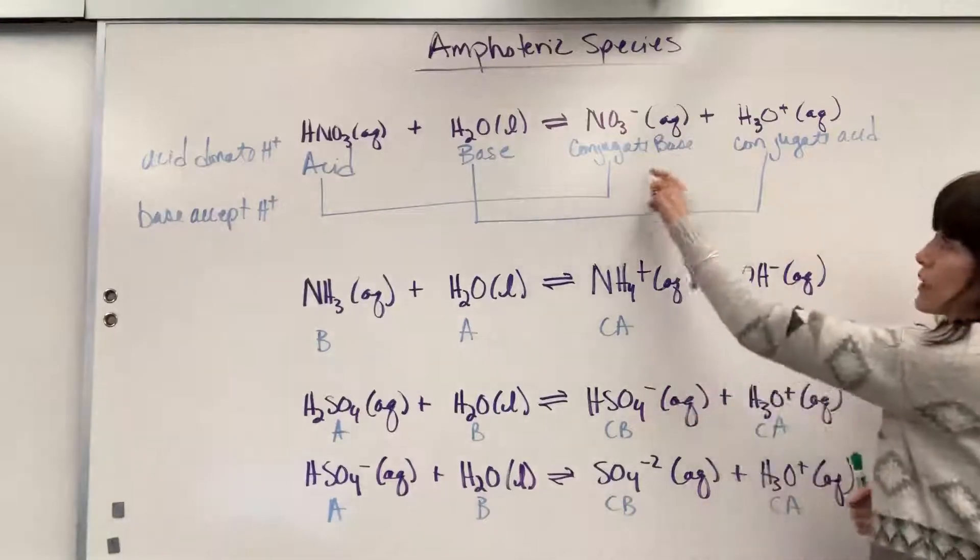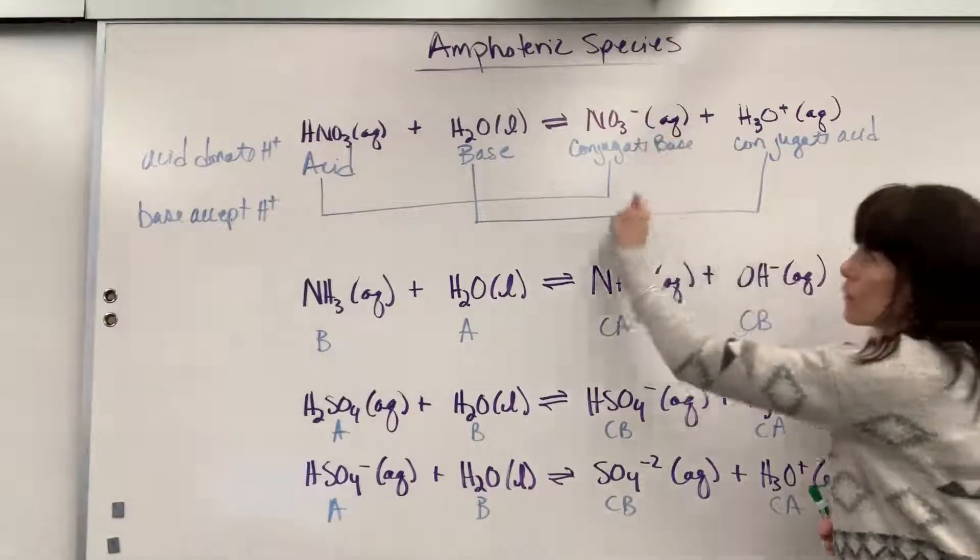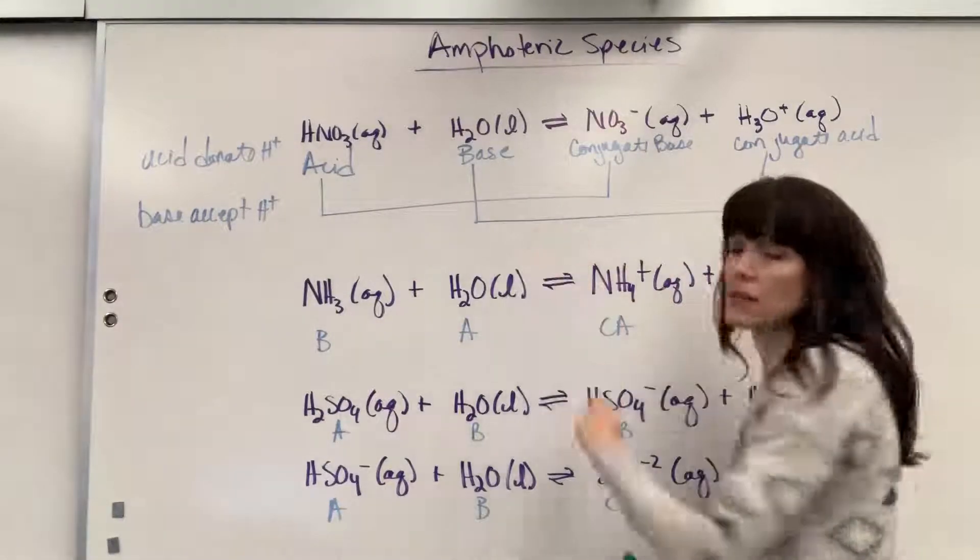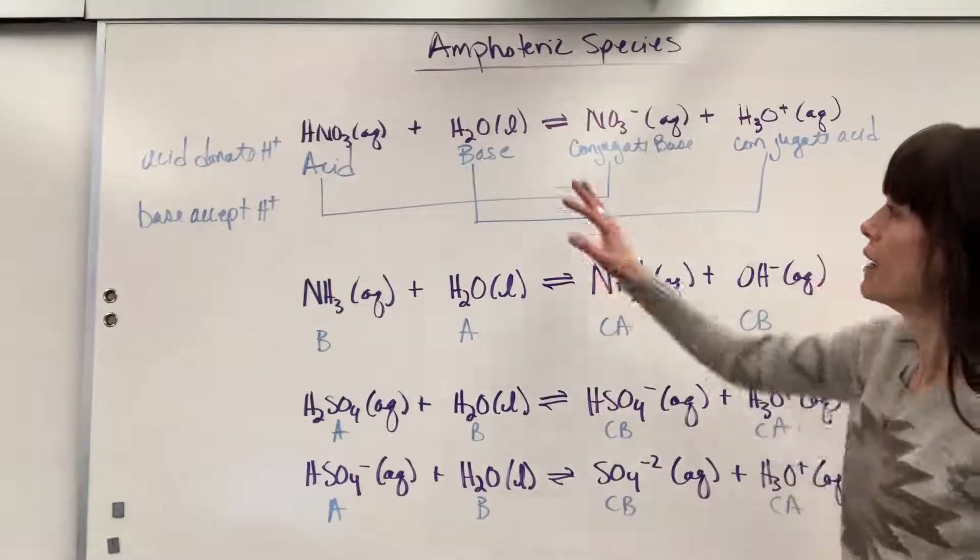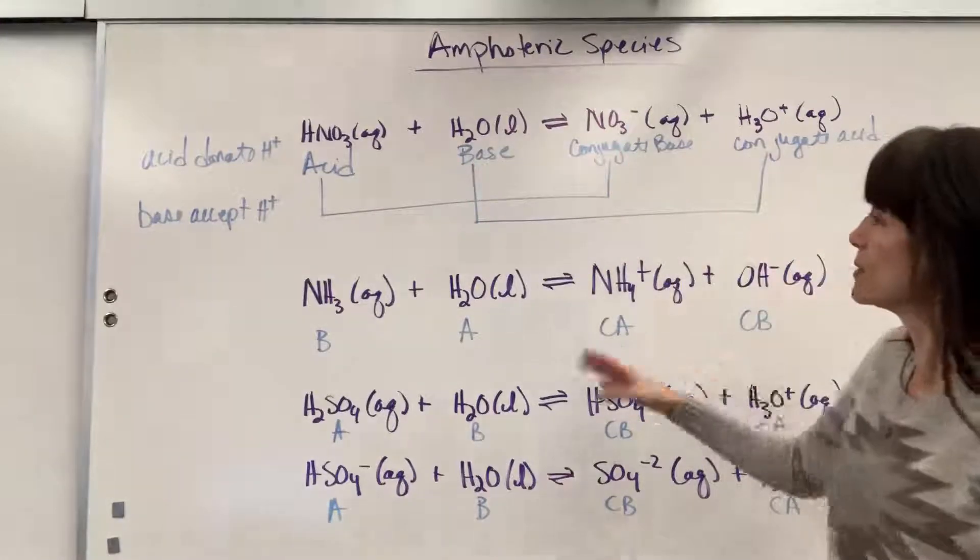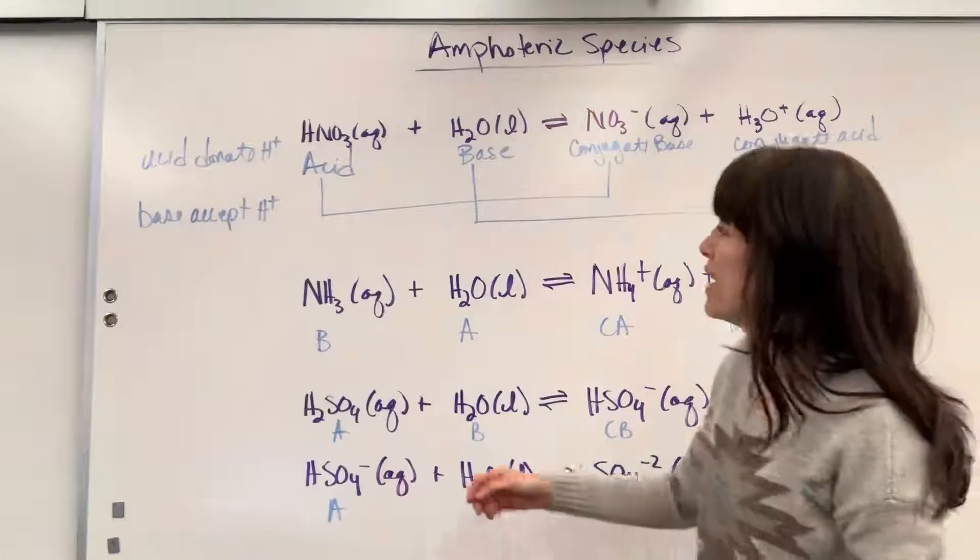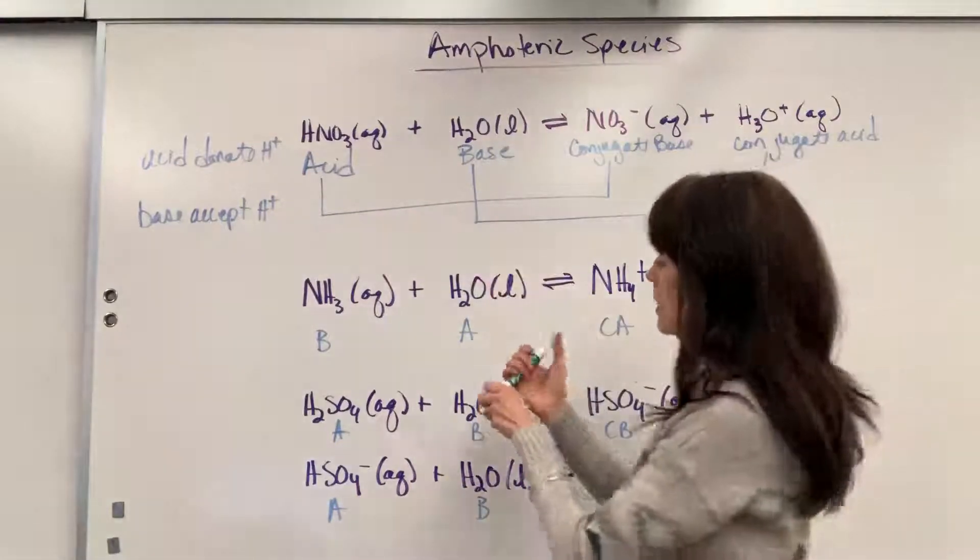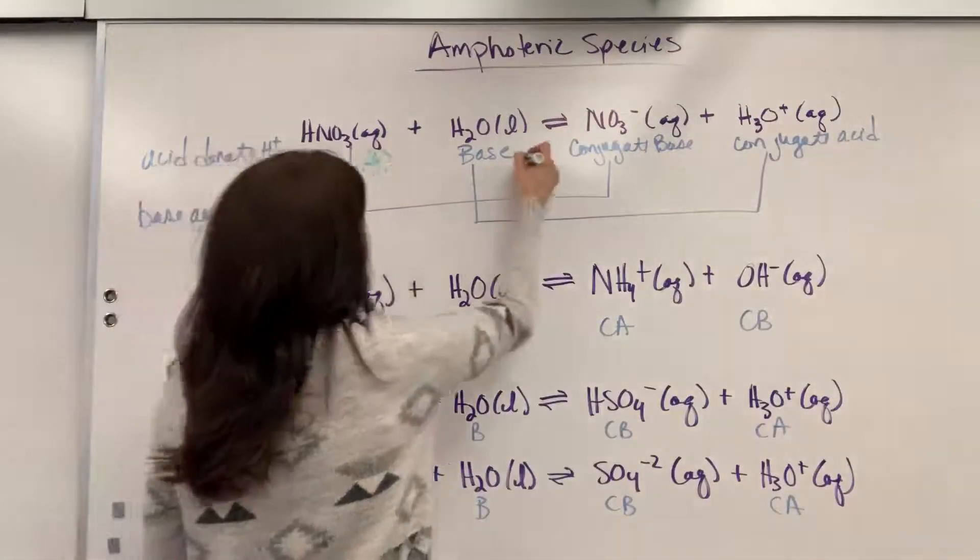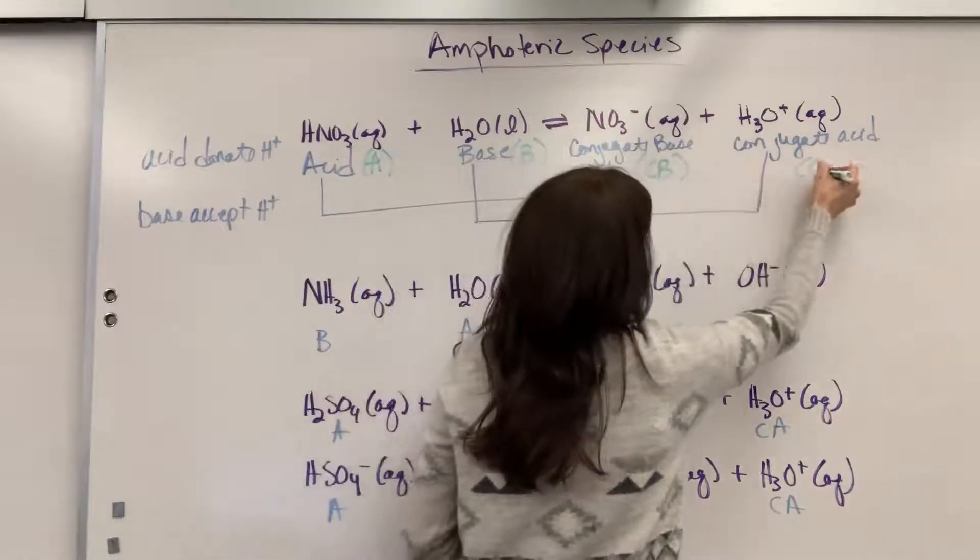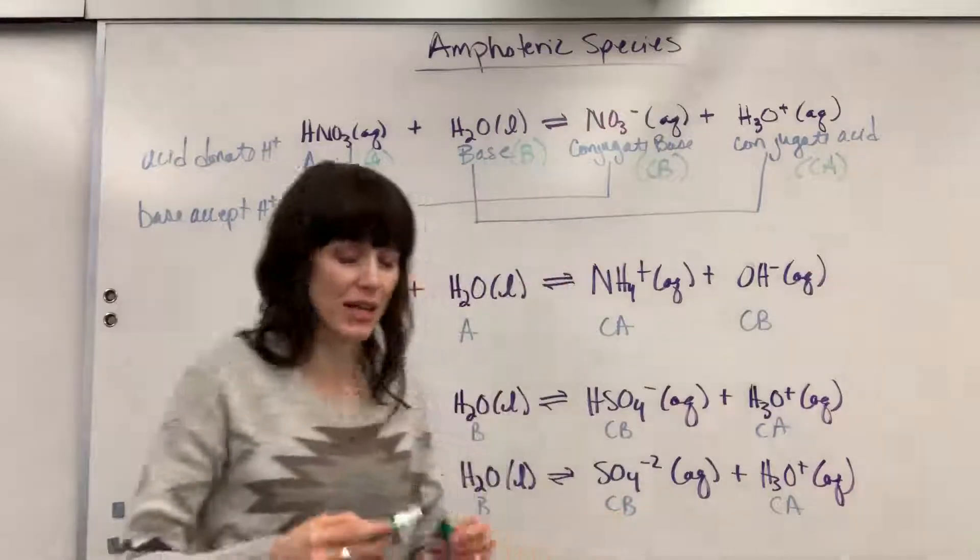As you look in the reverse direction, you can see the base that's going to accept the hydrogen, and this acid is going to donate the hydrogen. It's important to have these labeled. I've done the rest of these with just some shorthand to save some time. A is for acid, B is for base, CB is conjugate base, and CA is our conjugate acid.